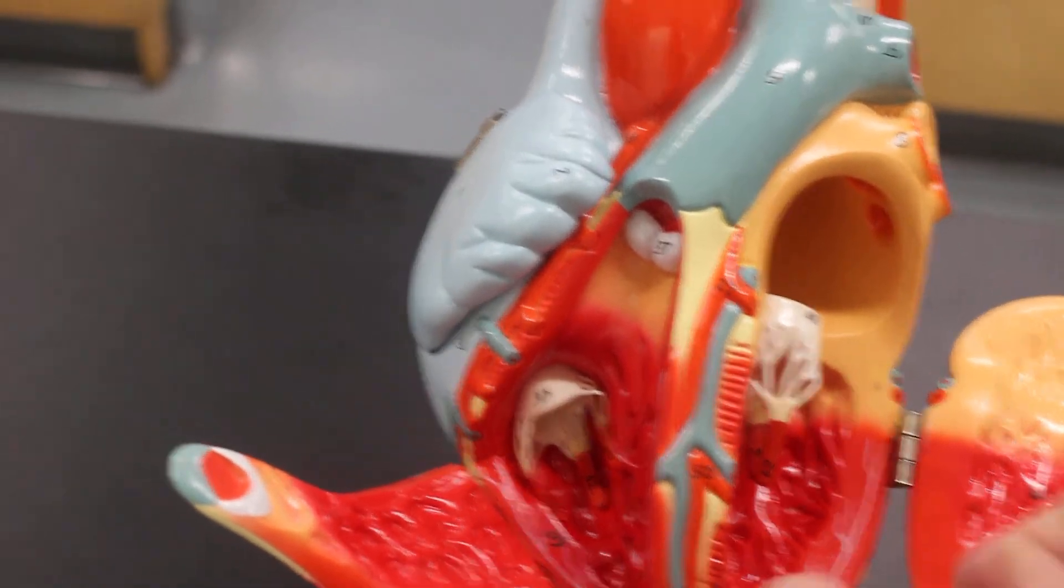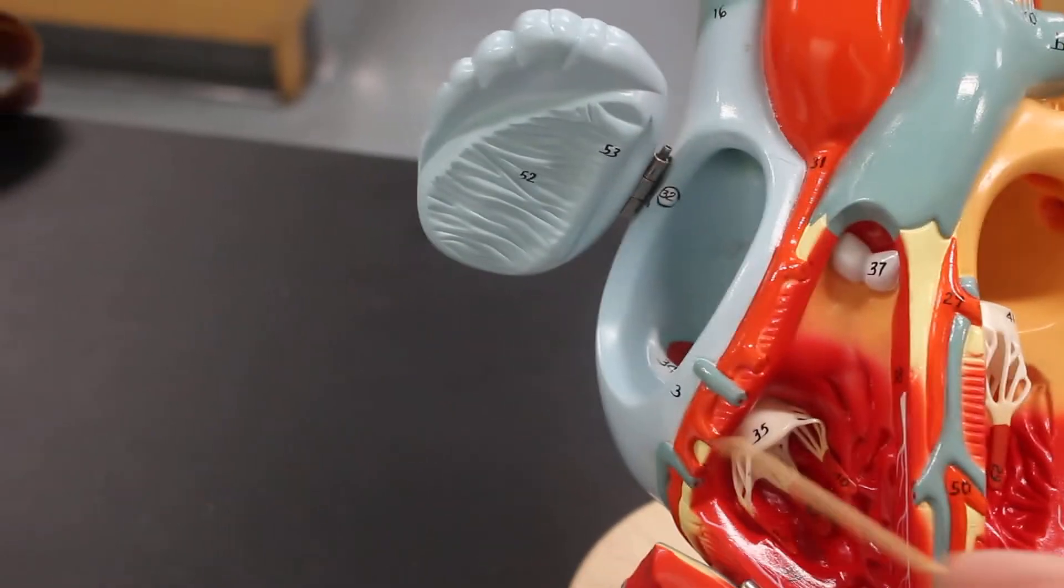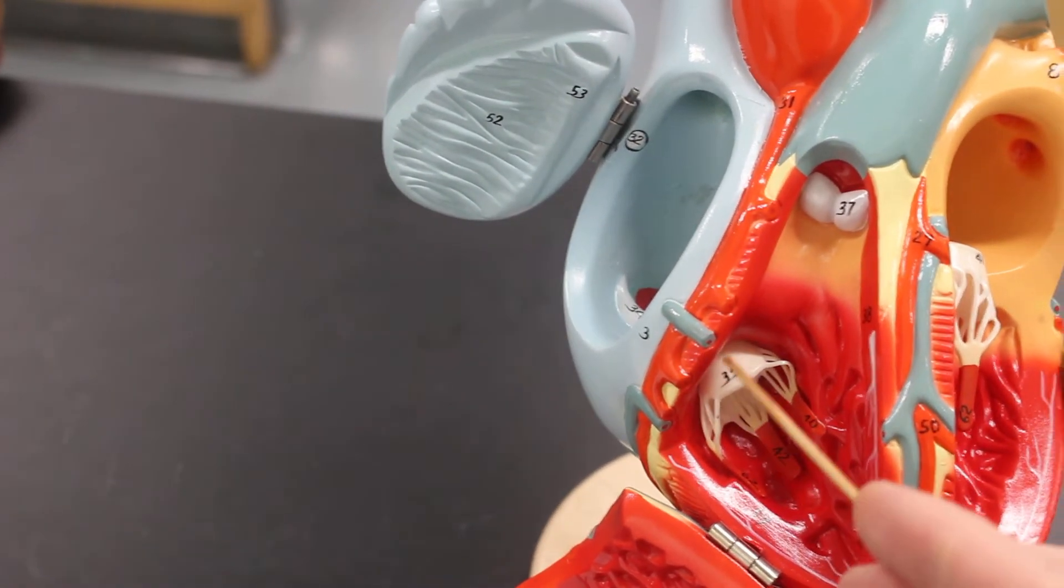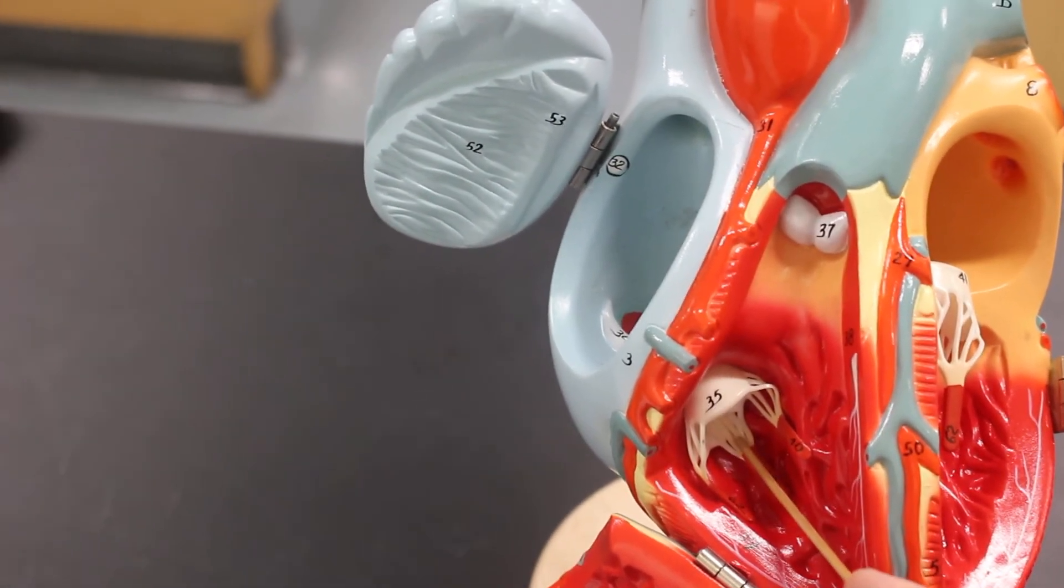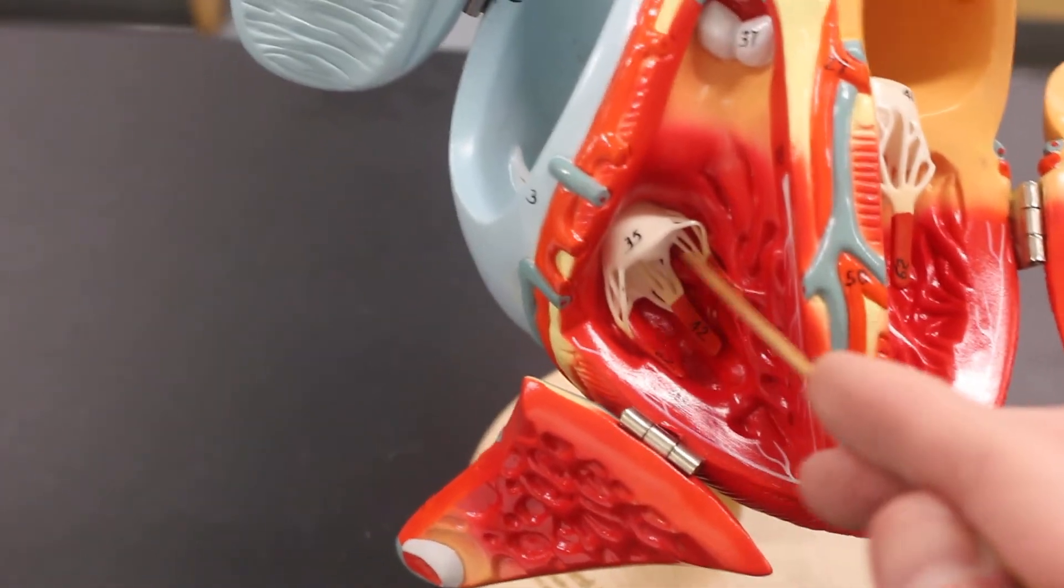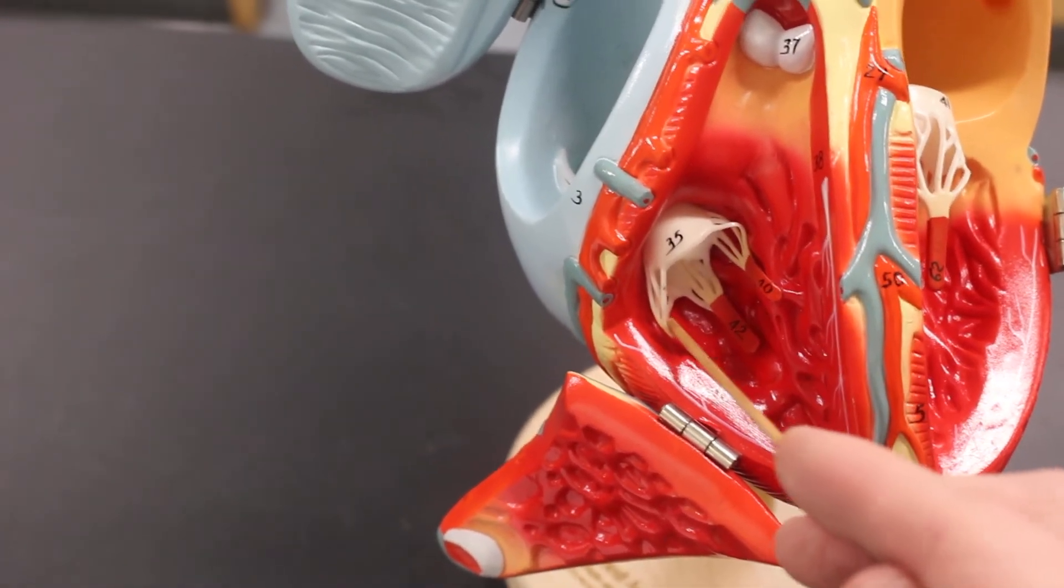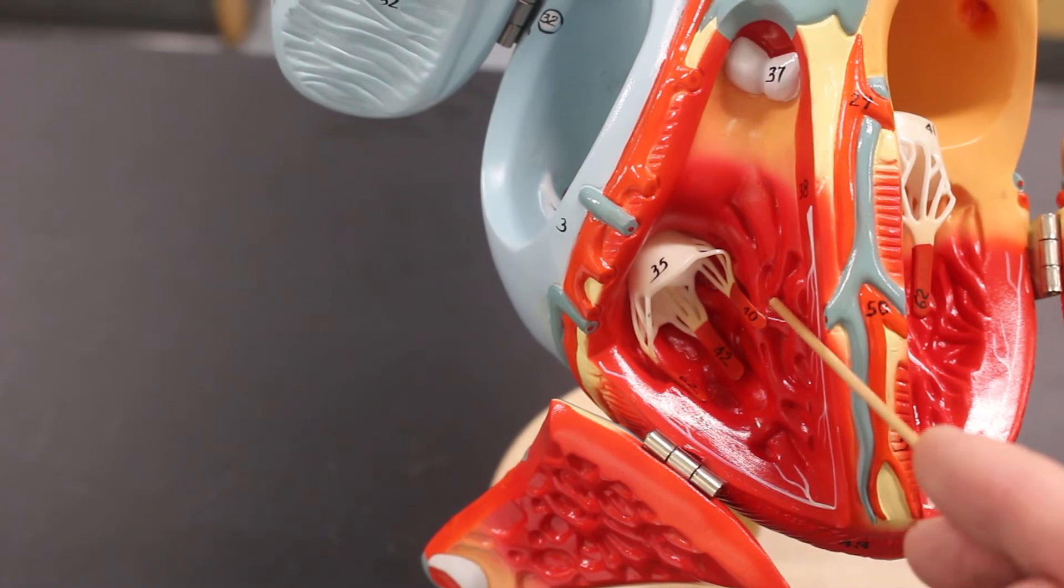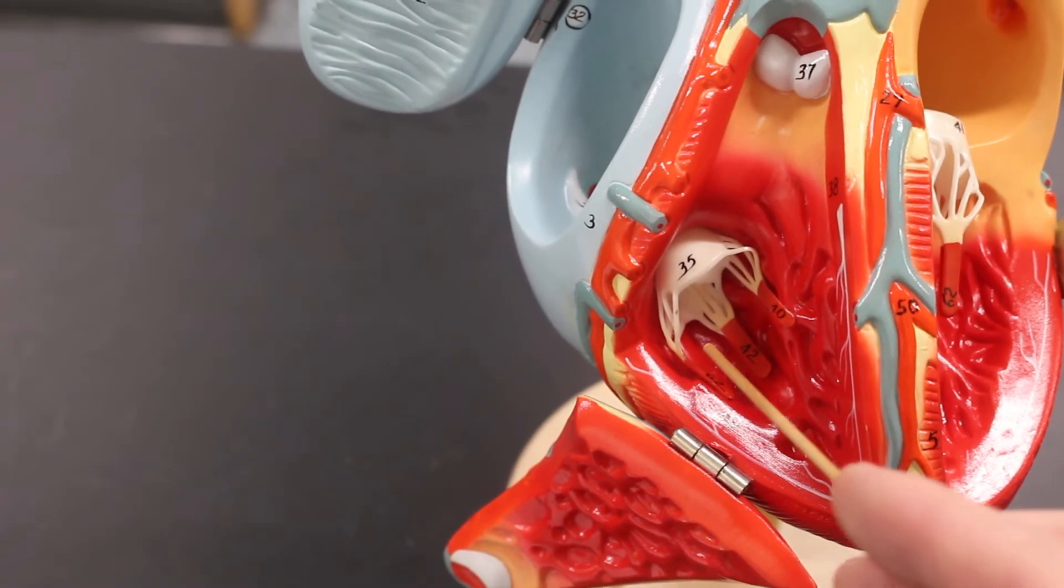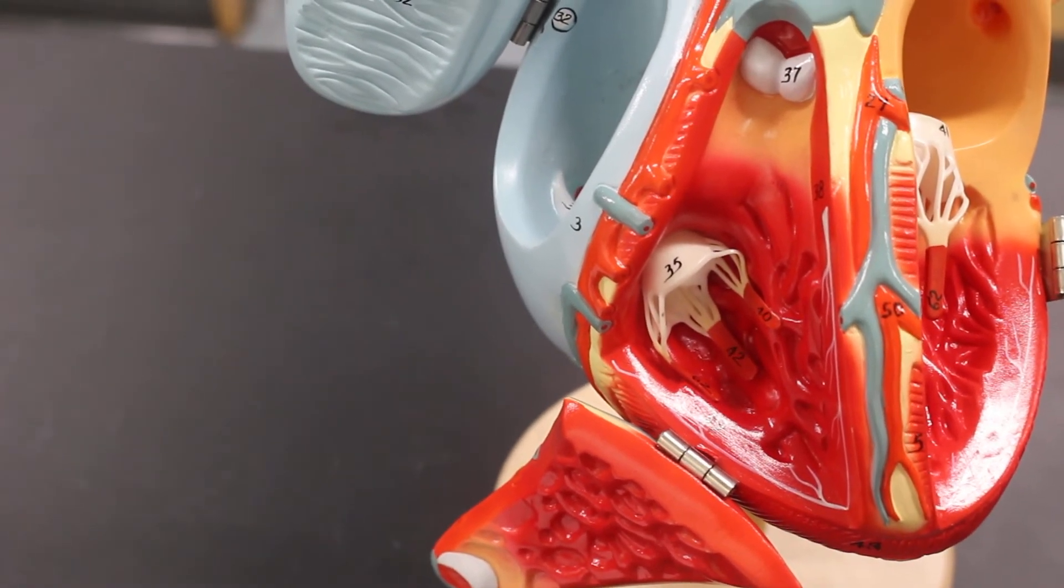Then we have four valves. We have this valve which is the tricuspid valve. This is also known as the right atrioventricular valve. The little strings on it are the chordae tendineae and these little red bits are the muscles, the papillary muscles attaching it to the walls of the ventricle.